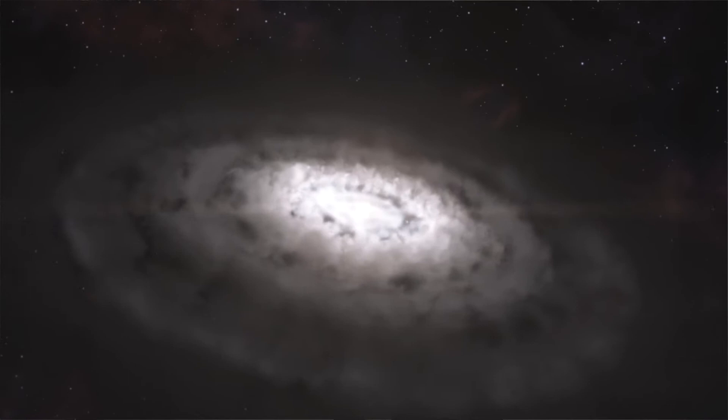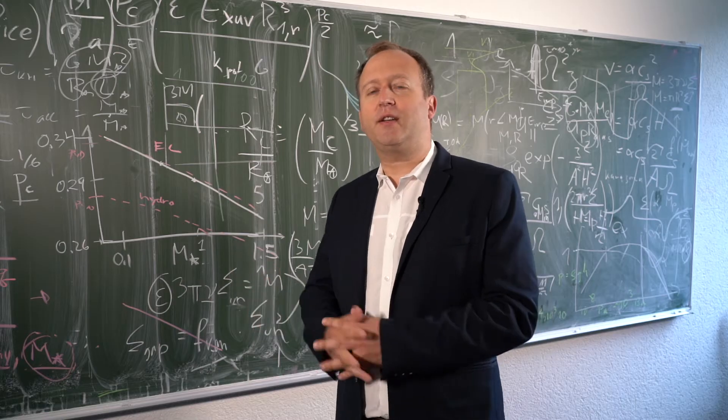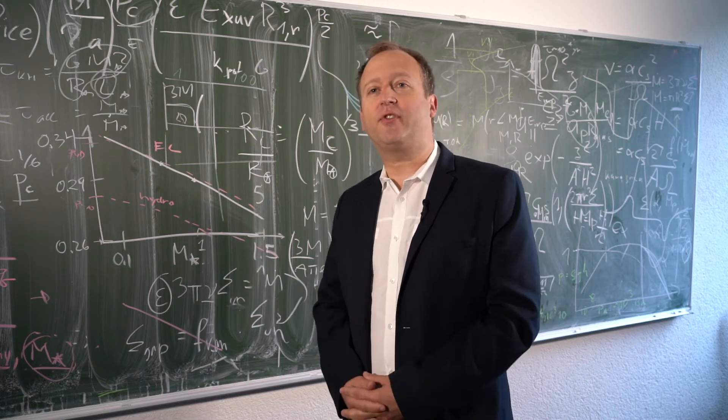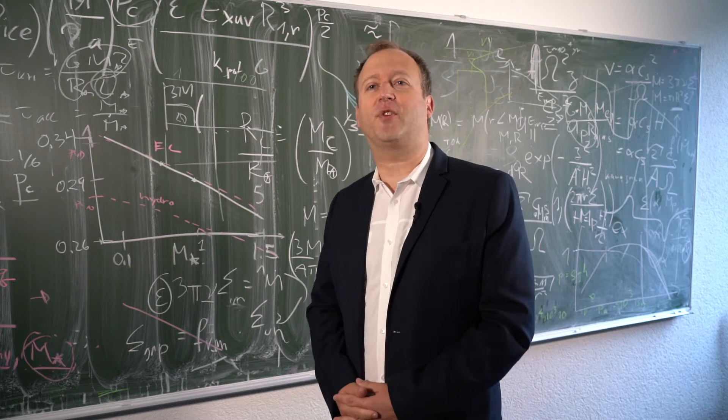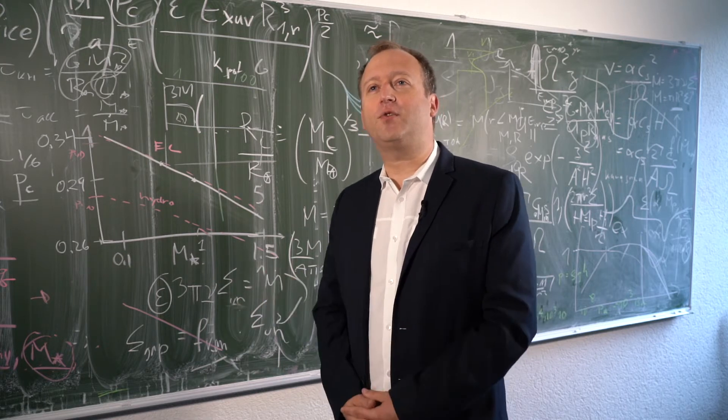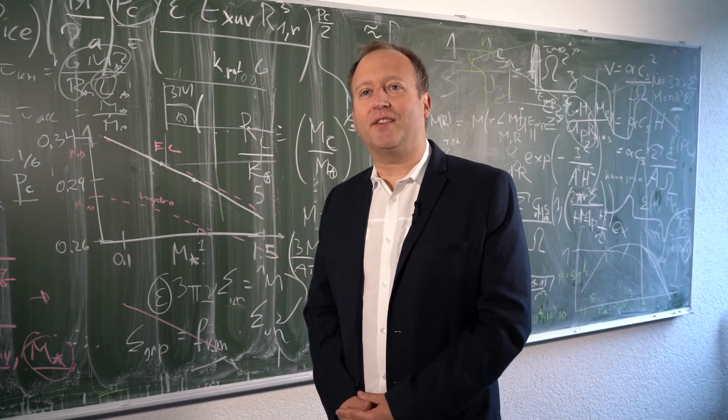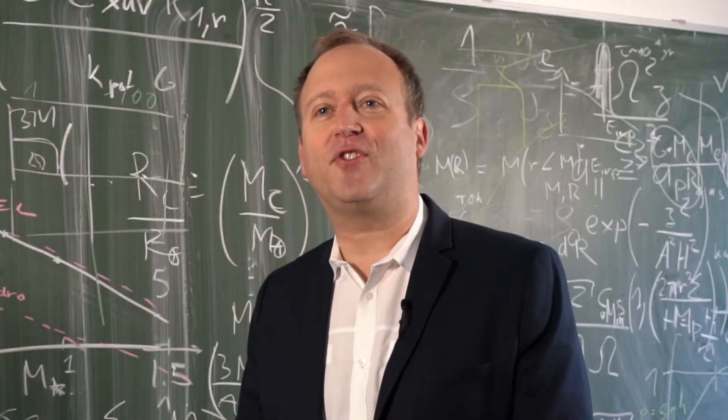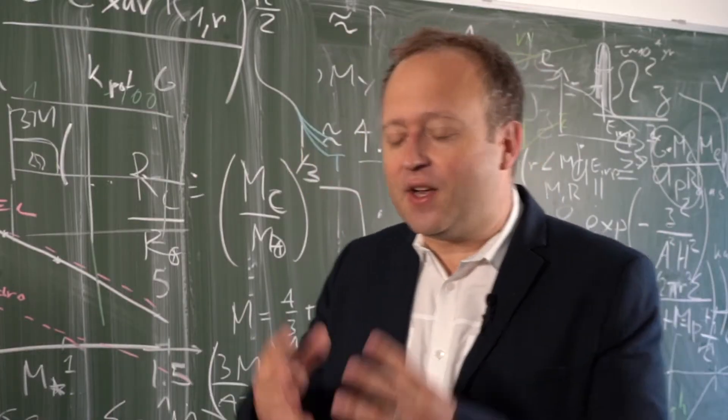In this disk we start with gas mostly hydrogen and helium, about 95% or 99%, and a little bit of tiny dust grains, and from this we then need to form the planets. So this is basically the first stage.